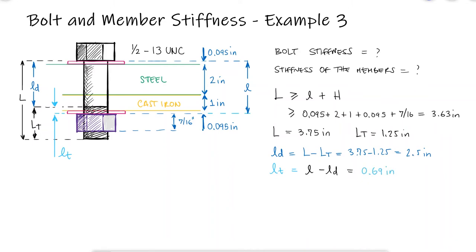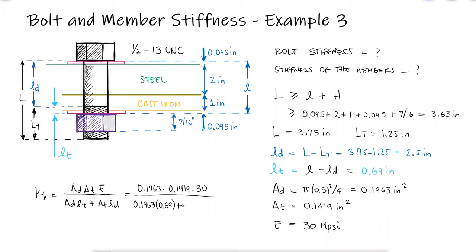With the same process that we used during the main video to find the cross-section area of the unthreaded and the threaded sections and the elastic modulus of the steel, we can find the bolt stiffness.